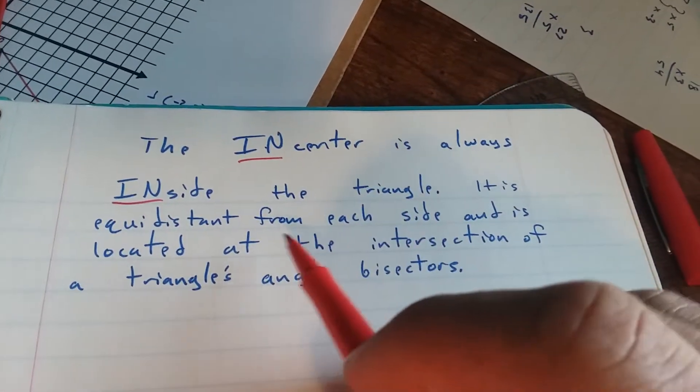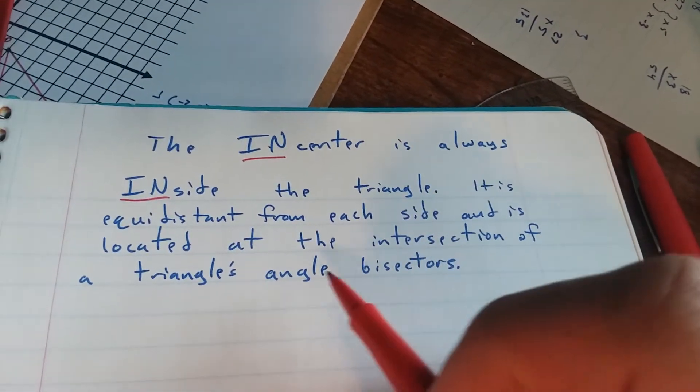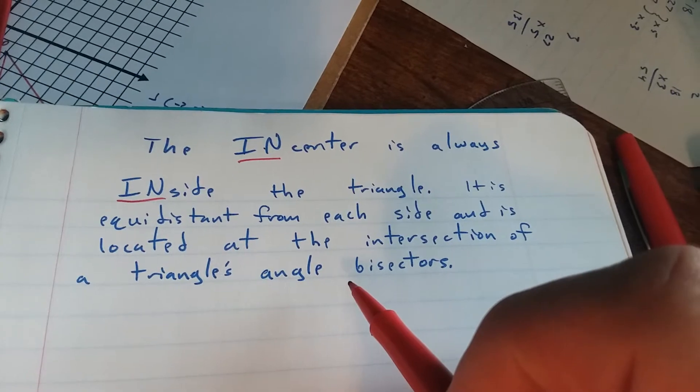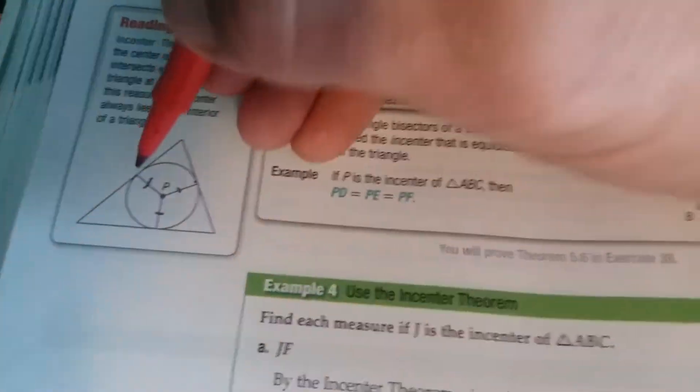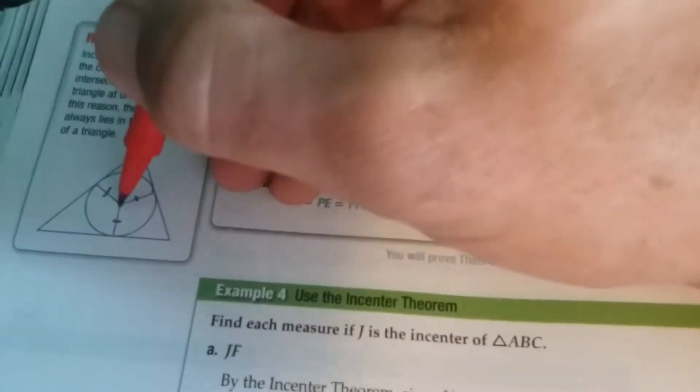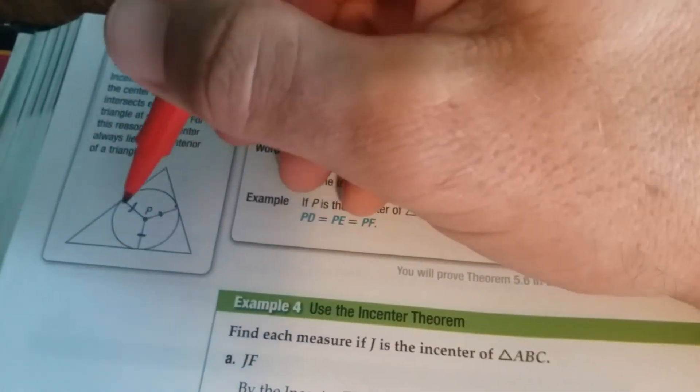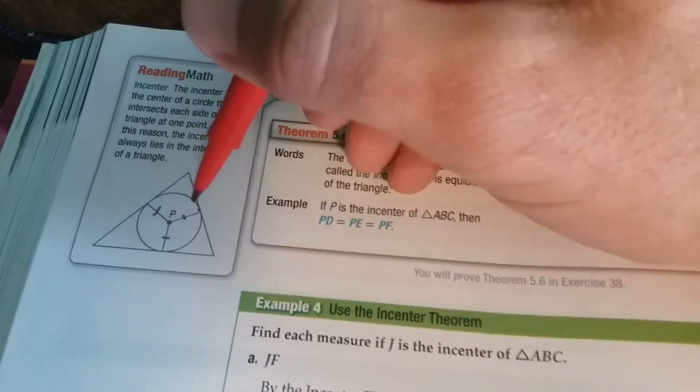It is equidistant from each side and is located at the intersection of the triangle's angle bisectors. So if you look at this, the distance from P to each side is the same distance. So P is the center of what we call the in-circle. This is called an in-circle. It touches each side of the triangle.